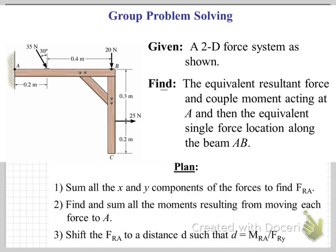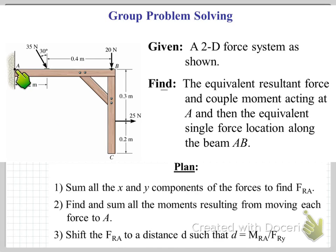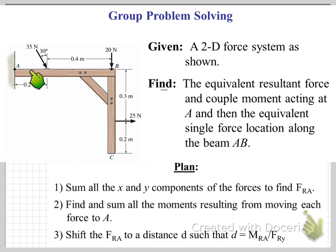Let's consider our plan. First we'll sum all of the X and Y components of the forces to find the resultant force at A. Note that we've got a force acting at an angle, so we'll need to find its component forces in the X and Y direction. Then we'll find the sum of all the moments about point A. Once we have our equivalent moment and force at A, we'll find the equivalent single force by dividing the resultant moment by the Y component of our resultant force — we don't need the X component because it passes through point A and will have no moment.